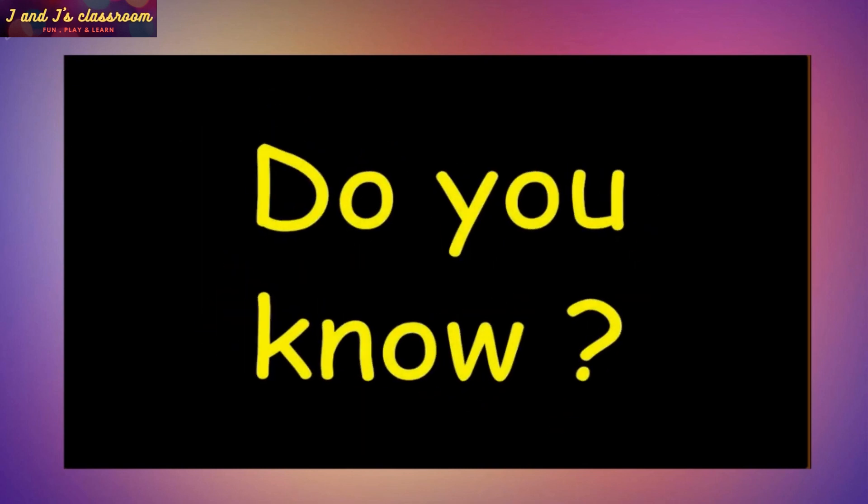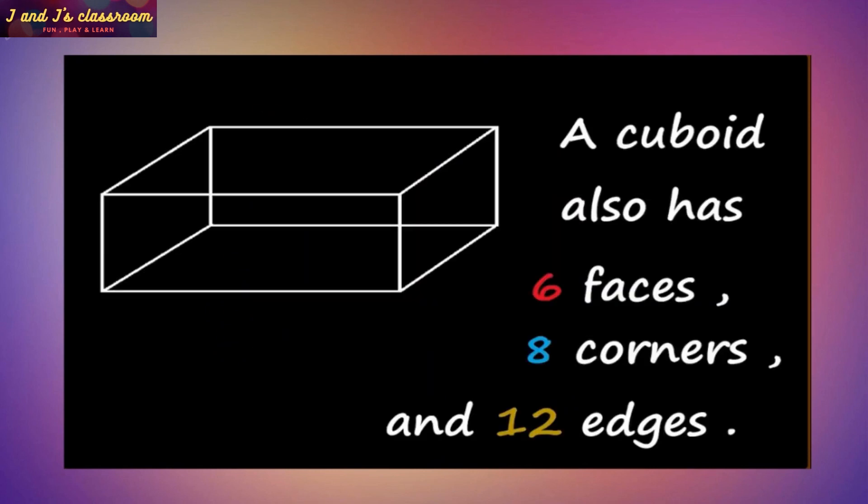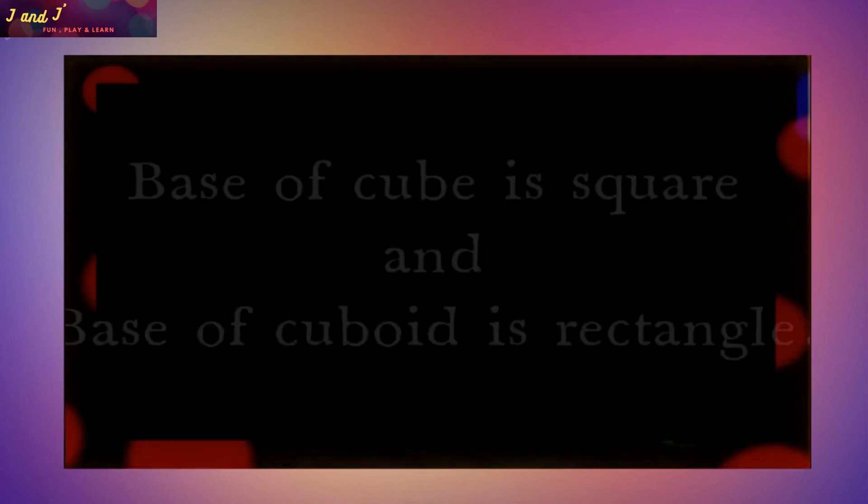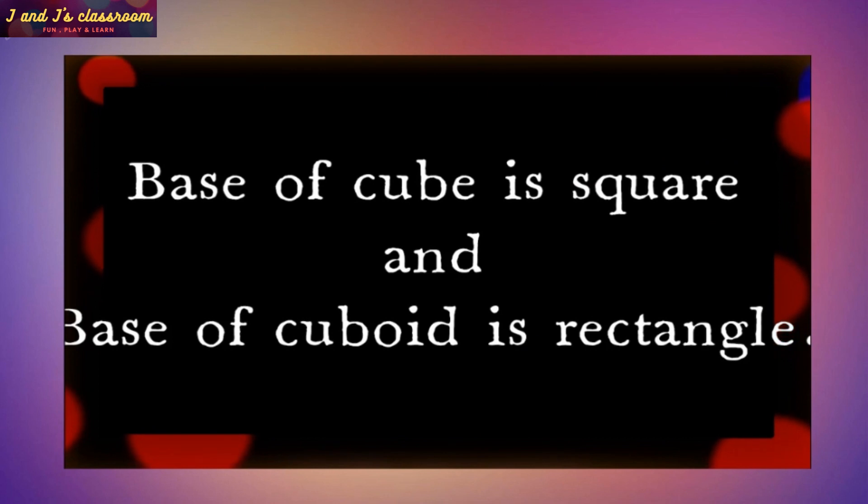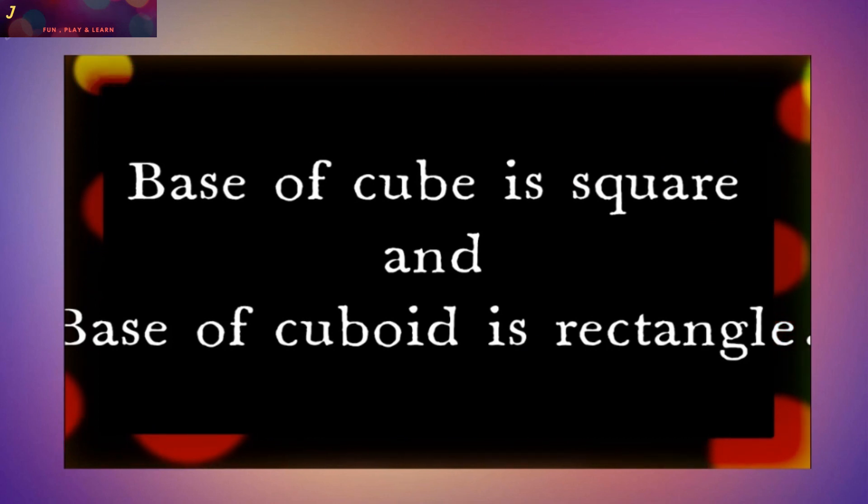Do you know? A cuboid also has 6 faces, 8 corners and 12 edges like cube. But the base of cube is square and the base of cuboid is rectangle.